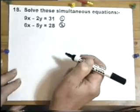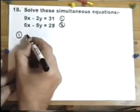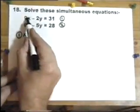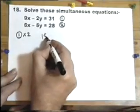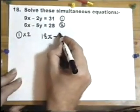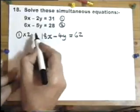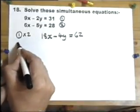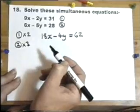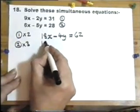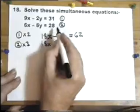Always label this to show the examiner exactly what you're thinking. I'm going to take equation 1 and multiply each part by 2. 9x times 2, minus 2y times 2, 31 times 2. I've multiplied throughout by 2. And now I'm going to take equation 2 and multiply each part by 3. 6x times 3 is 18x, 3 minus 5y is minus 15y, 3 times 28.